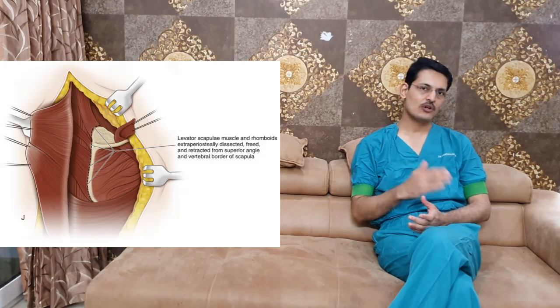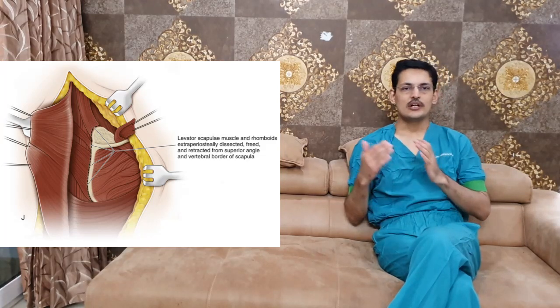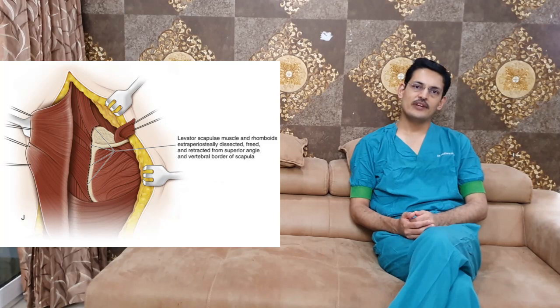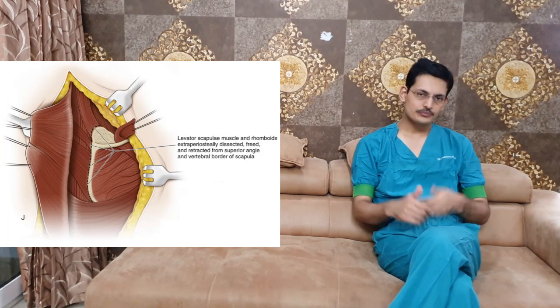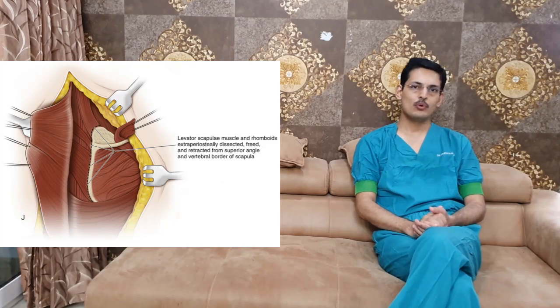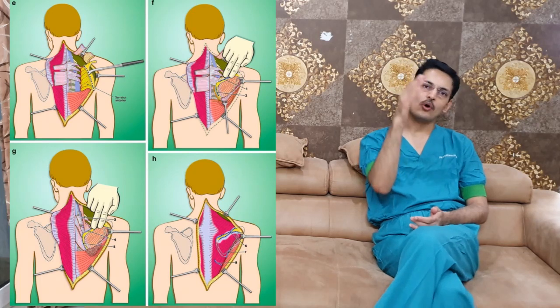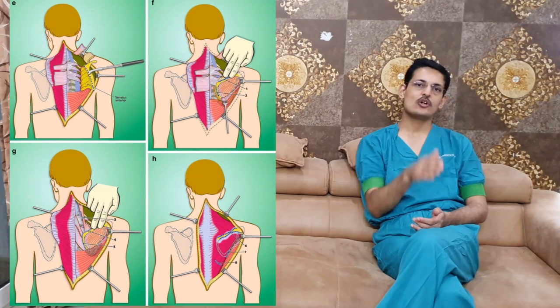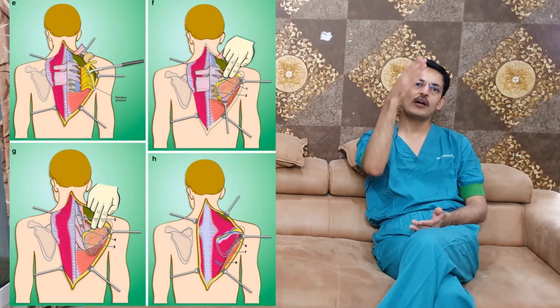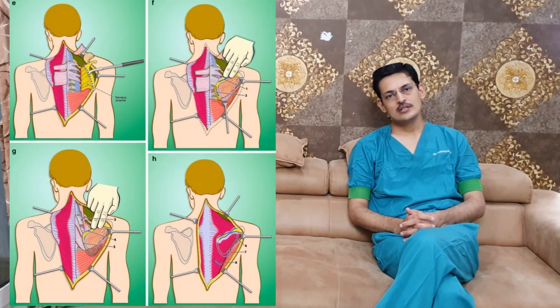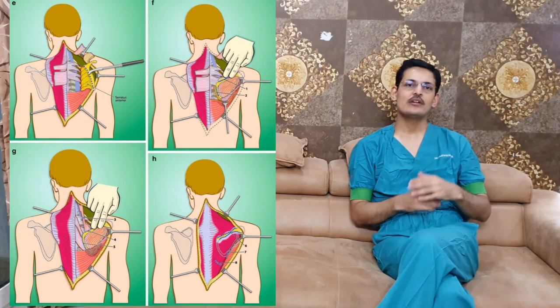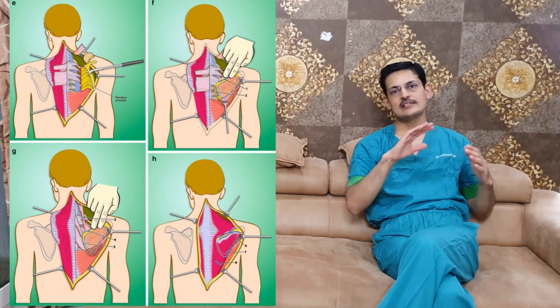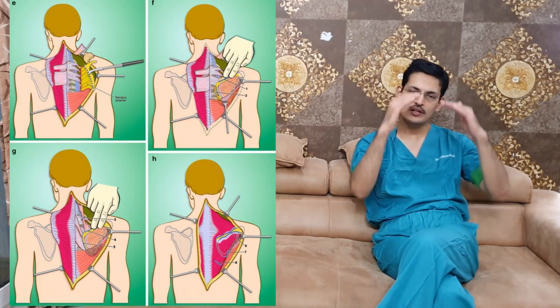The Green's procedure or modified Green's procedure is performed on the scapula side. In this approach, we remove the superior medial part of the scapula and the omovertebral bone and band. We release the trapezius muscles, rhomboids, and levator scapulae from the medial edge of the scapula, then tie the scapula in a corrected and lowered position, accommodating it with the serratus anterior and latissimus dorsi.